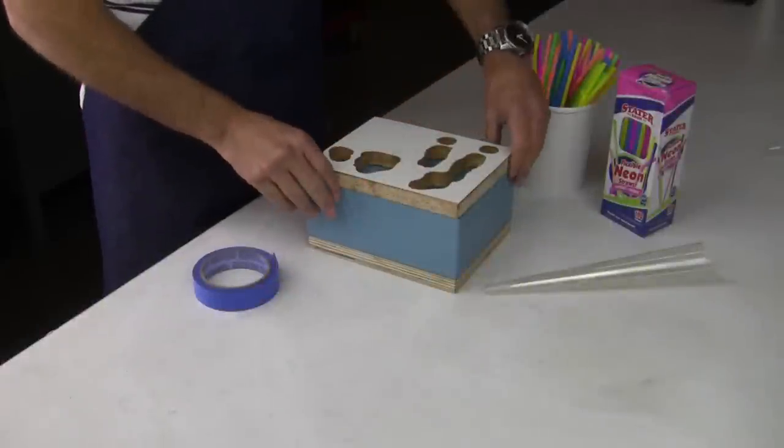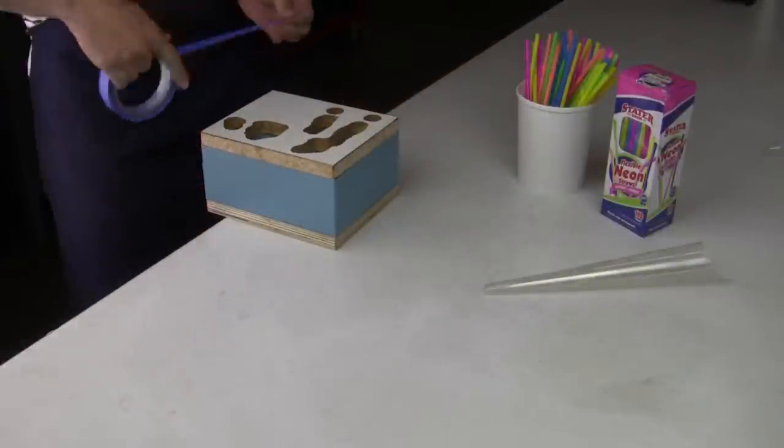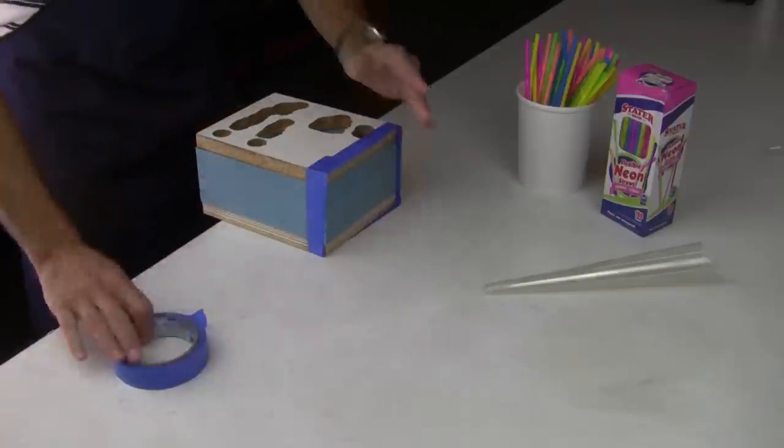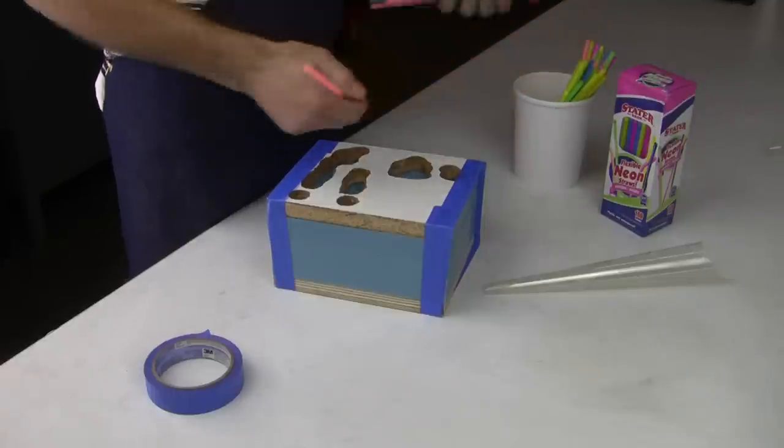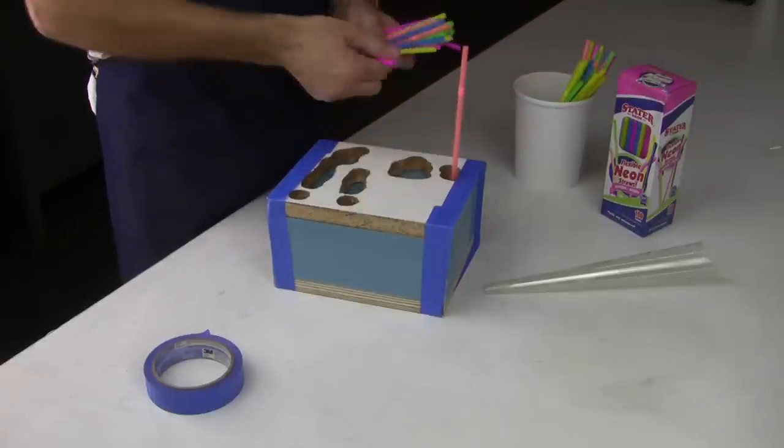We set the mold top on and secure it in place with tape. A couple of wraps is all that will be needed on a smaller mold like this. Next, we grab a handful of plastic straws and begin placing them in the vent holes.